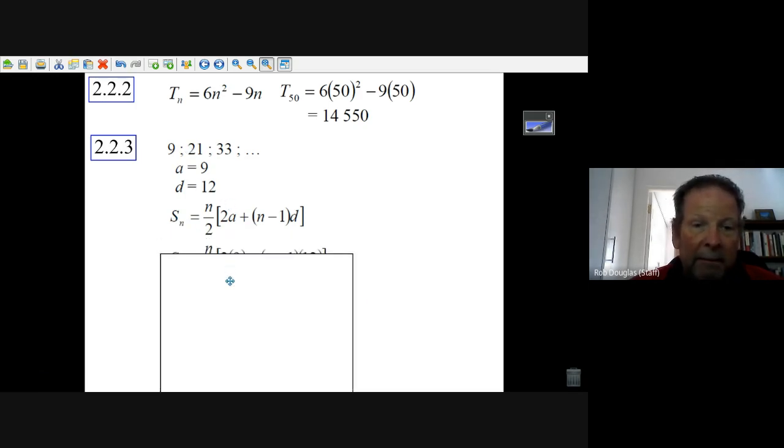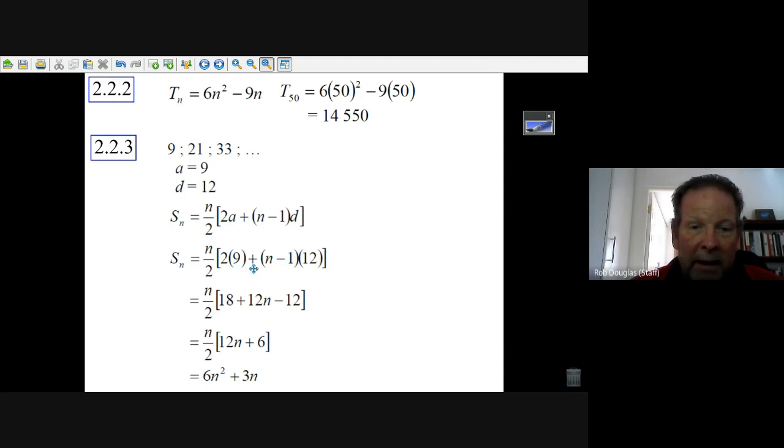And it is Sn equals n over 2 and then in a bracket times 2a plus n minus 1 times d. And all we do is we put a is 9, d is 12, and we just multiply it out and see what we get. We get 18 there, we get 12n minus 12, 18 minus 12 is 6, 12n times n is 12n squared divided by 2.